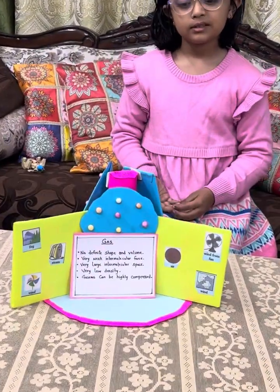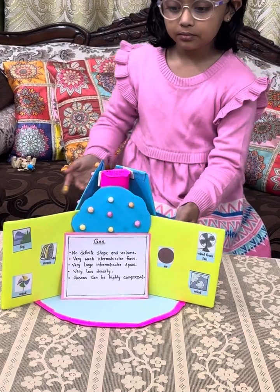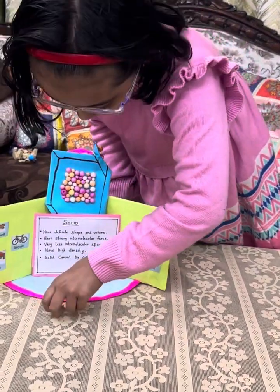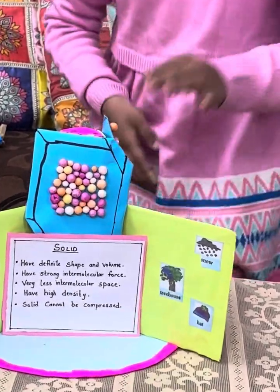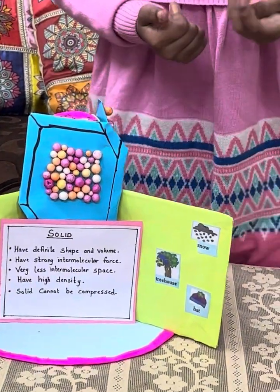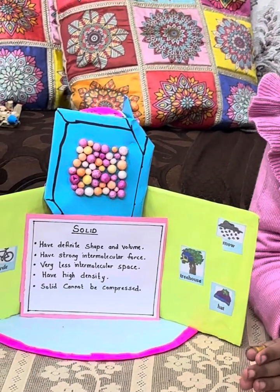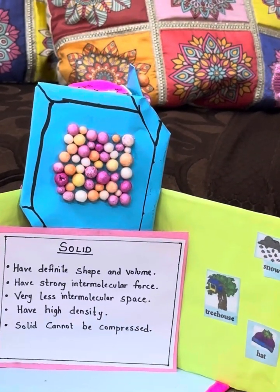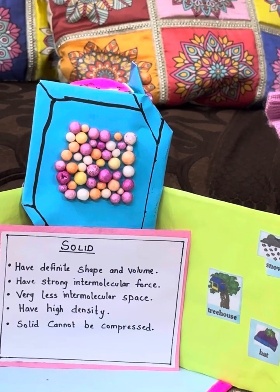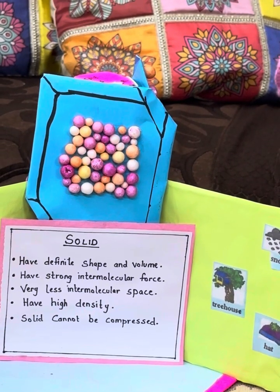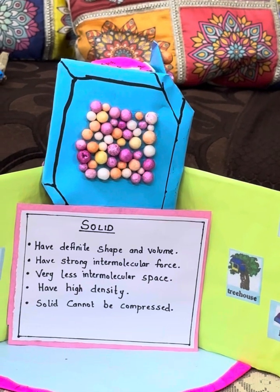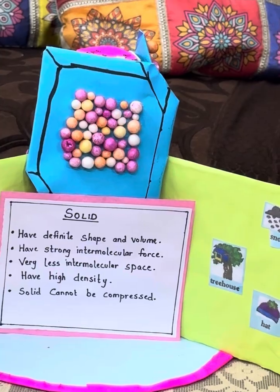Can you explain some other properties of these three states of matter? Solids have definite shape and volume. They have very strong intermolecular force. They have less intermolecular space. They have high density. Solids cannot be compressed.